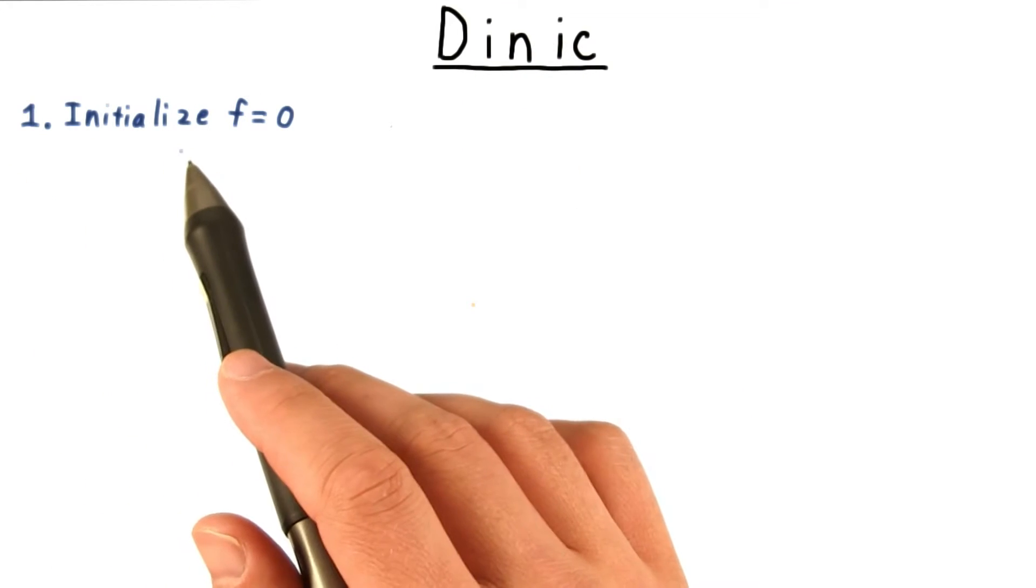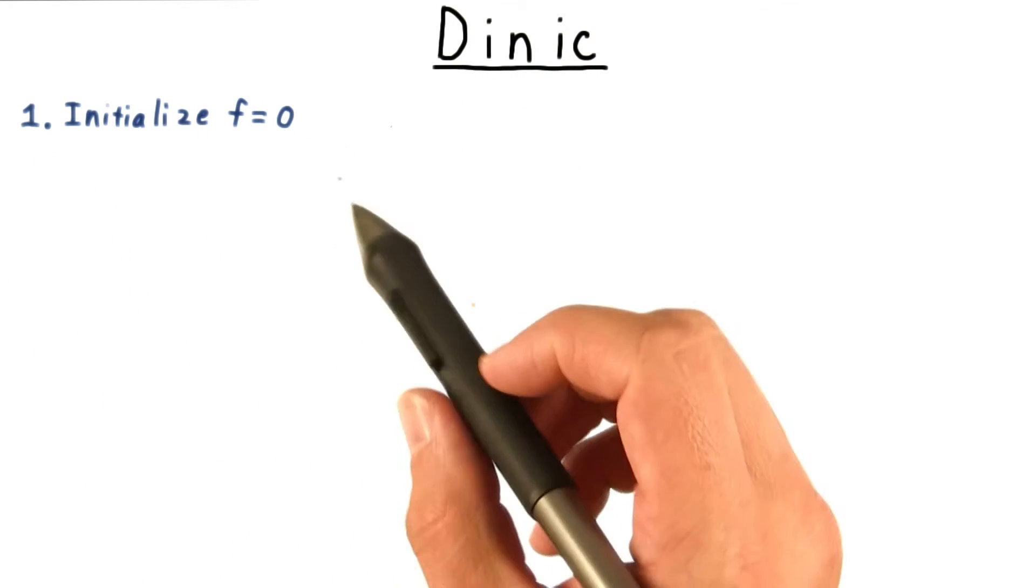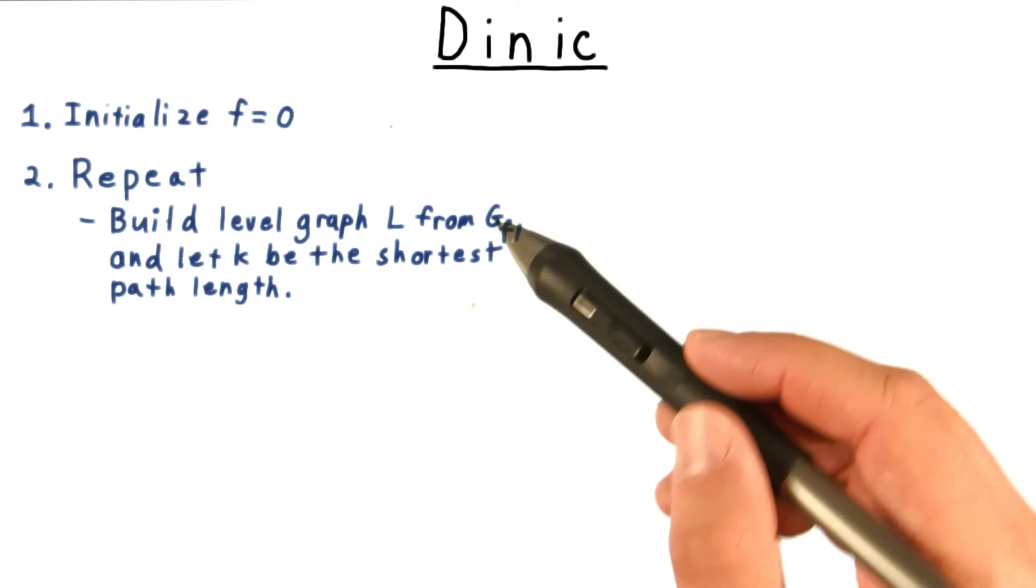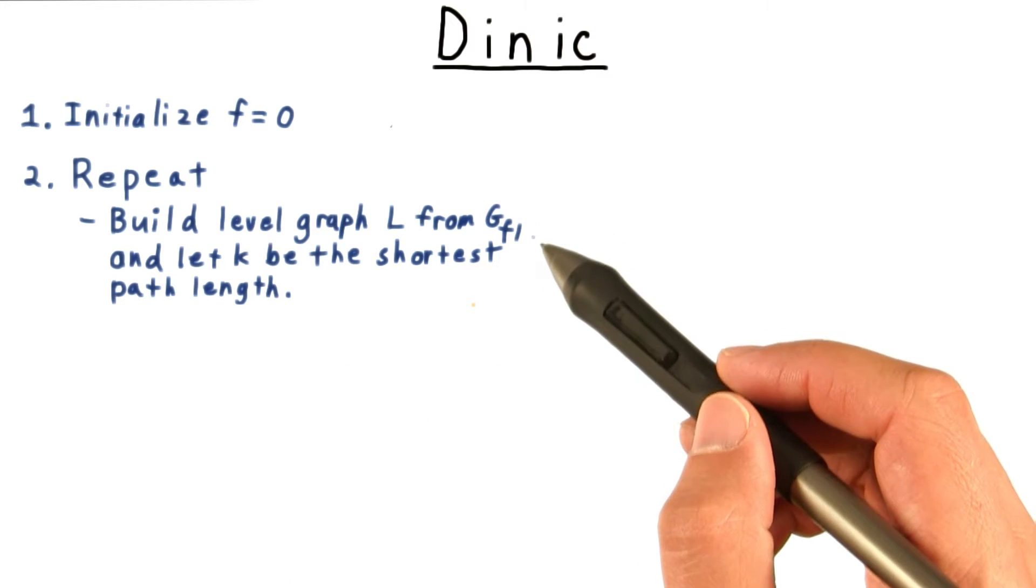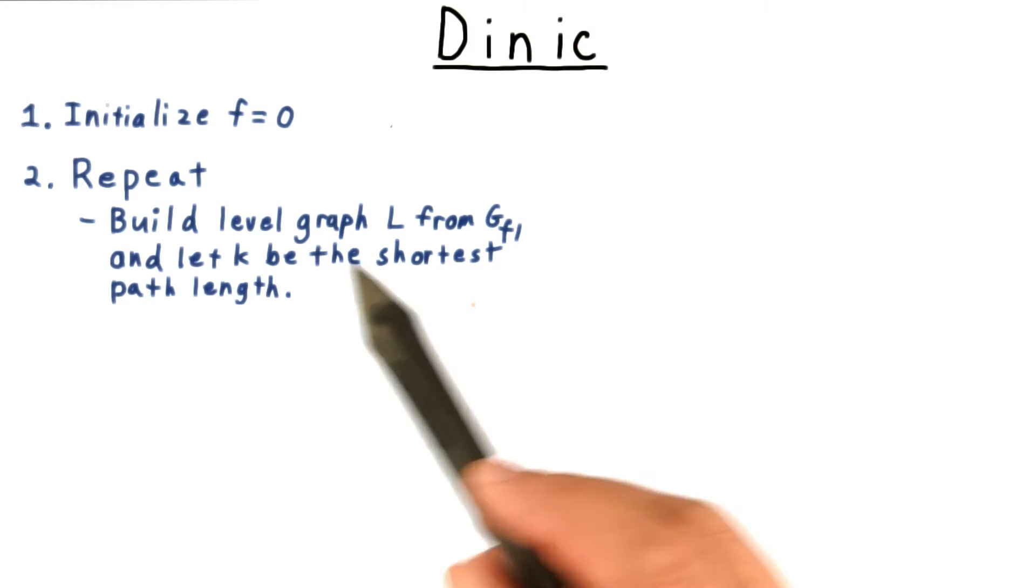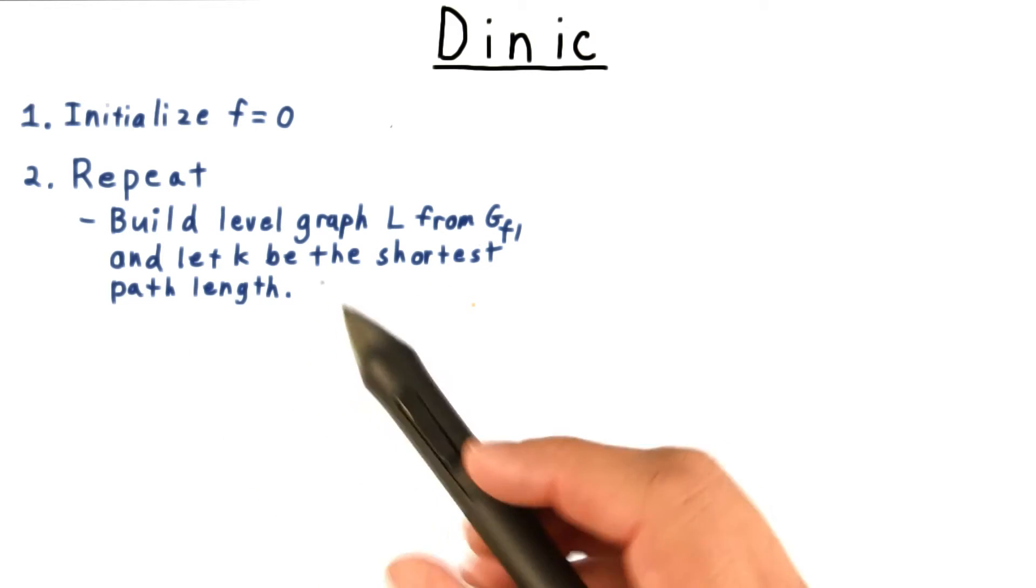As with all augmenting path strategies, we start with an initial flow of zero. Then we repeat the following: we build the level graph from the residual flow network, and let K be the shortest path length from S to T.